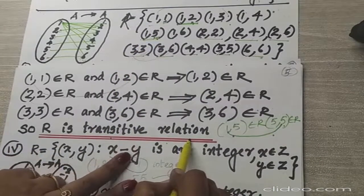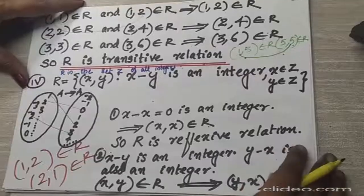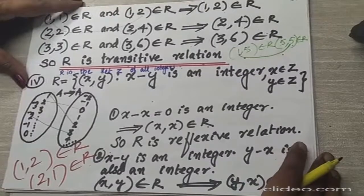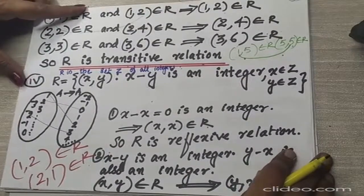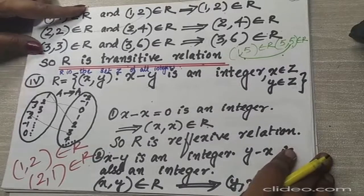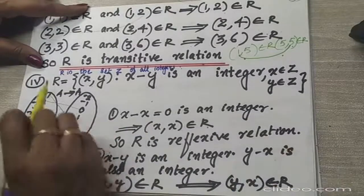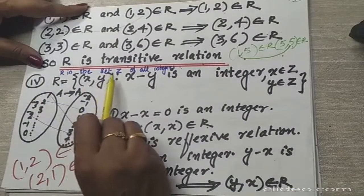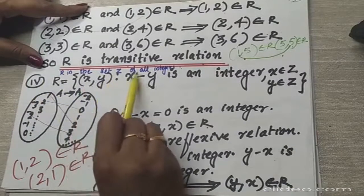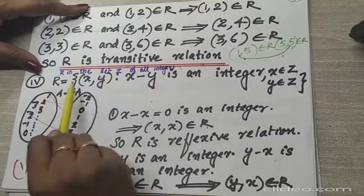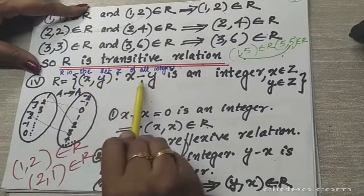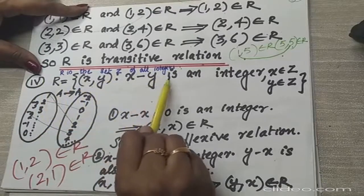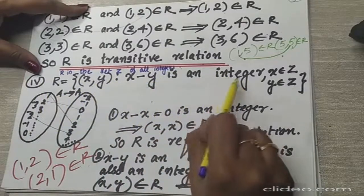I hope that is clear. Now the 4th sub-question of main question 1, Exercise 1.1: The relation R in the set Z of all integers is defined as R = {(x, y) such that x minus y is an integer}.